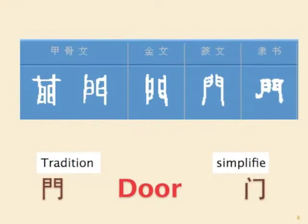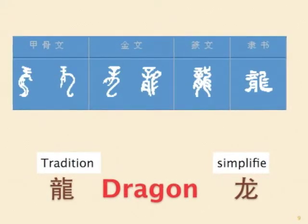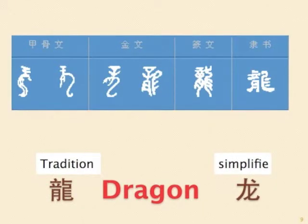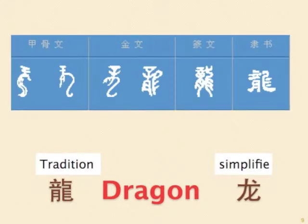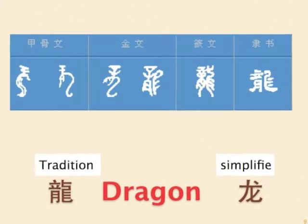Next word: dragon. The original word looks like a big snake wearing a crown. Later on, the lower left part evolved to be like teeth and mouth, and the right part represented fins of the dragon. The simplified form adopted the scripted version, which was created by calligraphy artists.